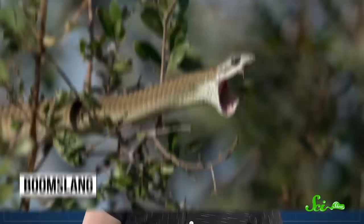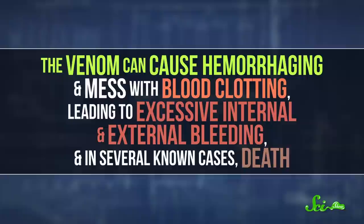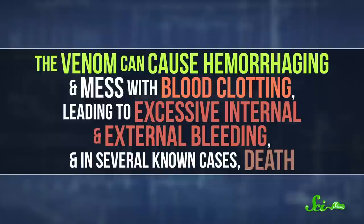Most of the time, tiger keelbacks use their venom to take down tasty fish, tadpoles, and their favorite, frogs and toads. They rarely bite humans, but when they do, it's not a fantastic experience for the human. The venom can cause hemorrhaging and mess with blood clotting, leading to excessive internal and external bleeding, and in several known cases, death.